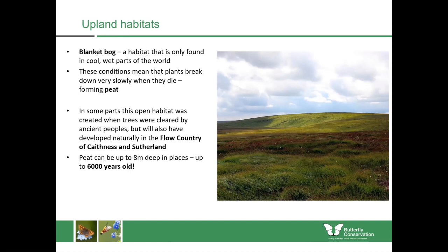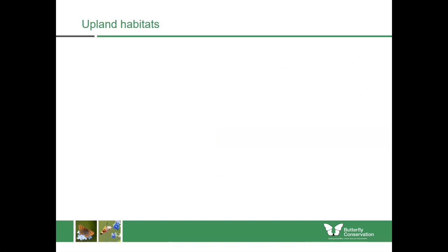Much of the uplands have blanket bog which was created whenever people cleared the land thousands of years ago, but in other areas of Scotland such as the Flow Country of Caithness and Sutherland, blanket bog would have developed naturally. The peat can trap a lot of carbon in the ground, and there's actually more carbon stored in the world's peatlands than in the world's forests.